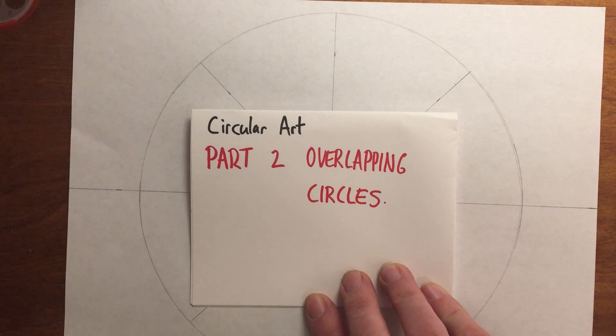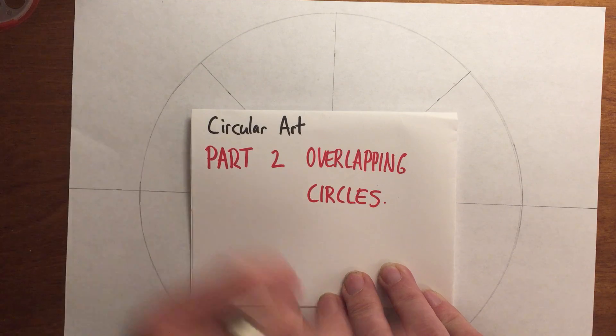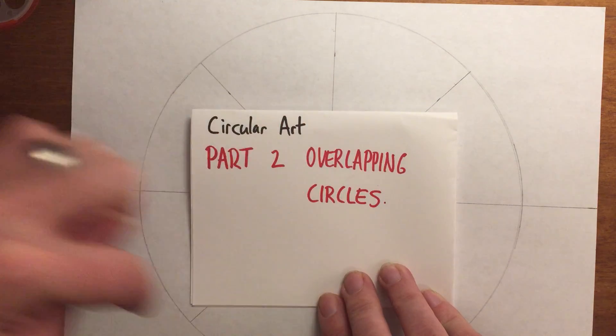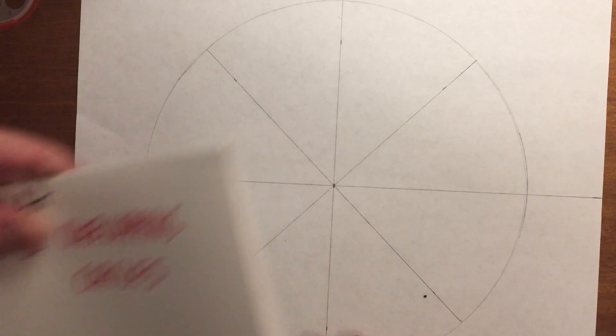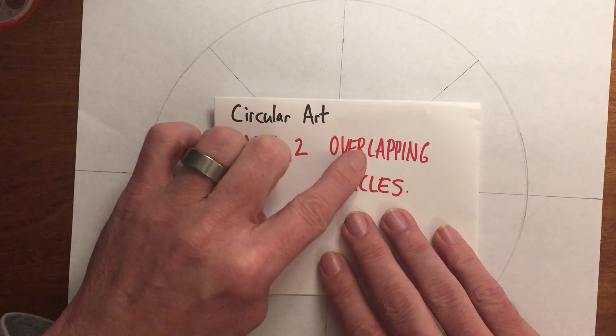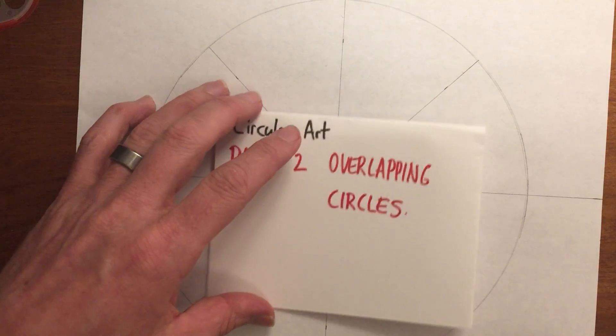Greetings ladies and gentlemen, this is part two of the overlapping circles. Part one was just creating a spinner that has eight parts, and I have that here. Part two is finishing it off.